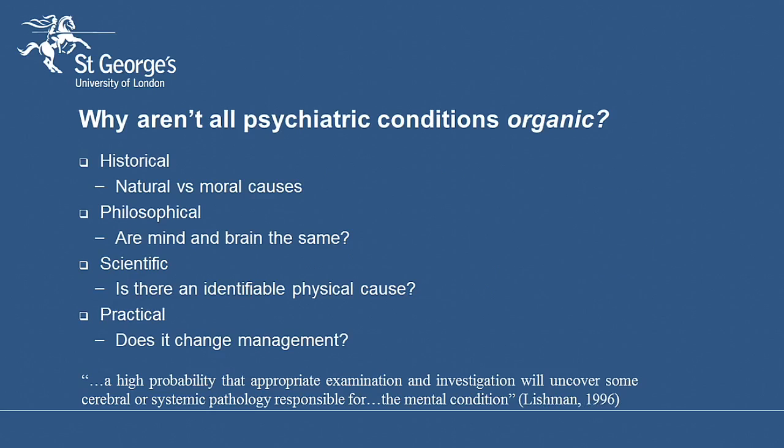There's a philosophical aspect to this question. The central question here is, are mind and brain the same thing? Clearly if the answer to this question is yes, then at some point in the future all psychiatric conditions will be considered organic. But this question is controversial amongst philosophers and psychiatrists, and some would argue that the answer is no, and that there will always be some psychiatric conditions where there is no physical underpinning.